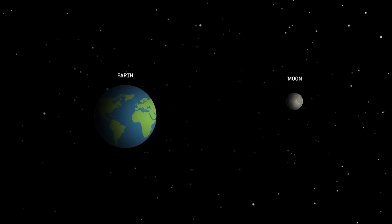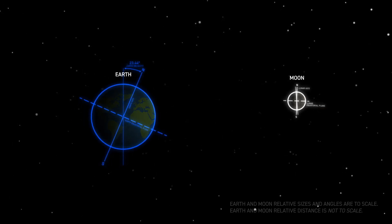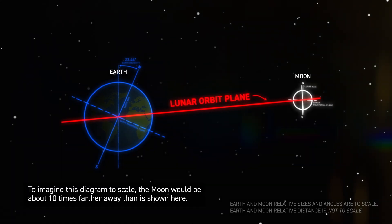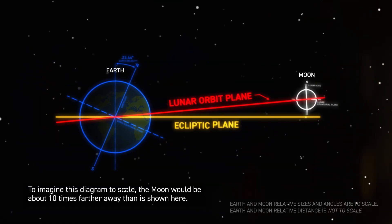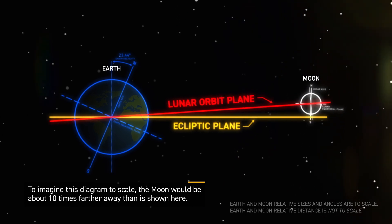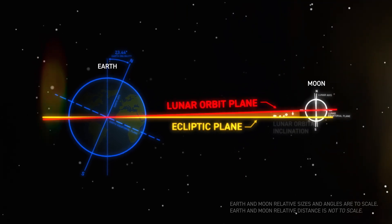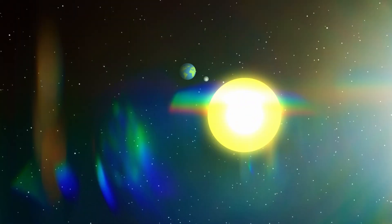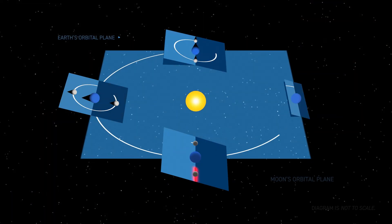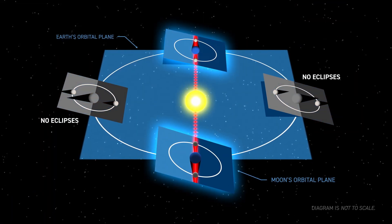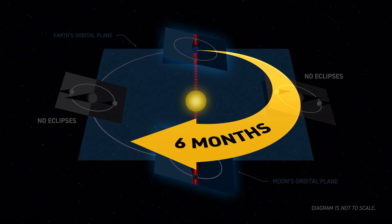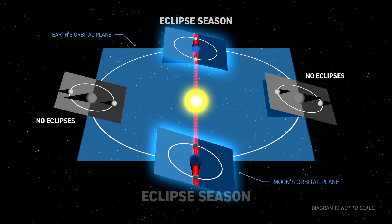As the moon orbits the earth, it creates a plane in space called the moon's orbital plane. As the earth orbits the sun each year, it also creates a plane in space called the ecliptic plane. The moon's orbital plane is tilted by about 5 degrees with respect to the ecliptic plane. However, twice a year the intersection of these two planes lines up with the sun, and eclipses are possible. This always occurs about six months apart, and we call these times eclipse seasons.